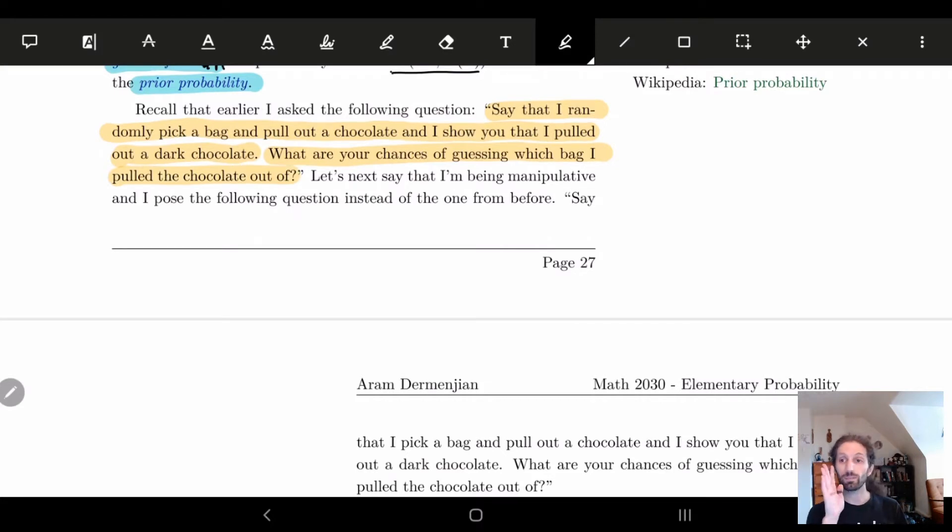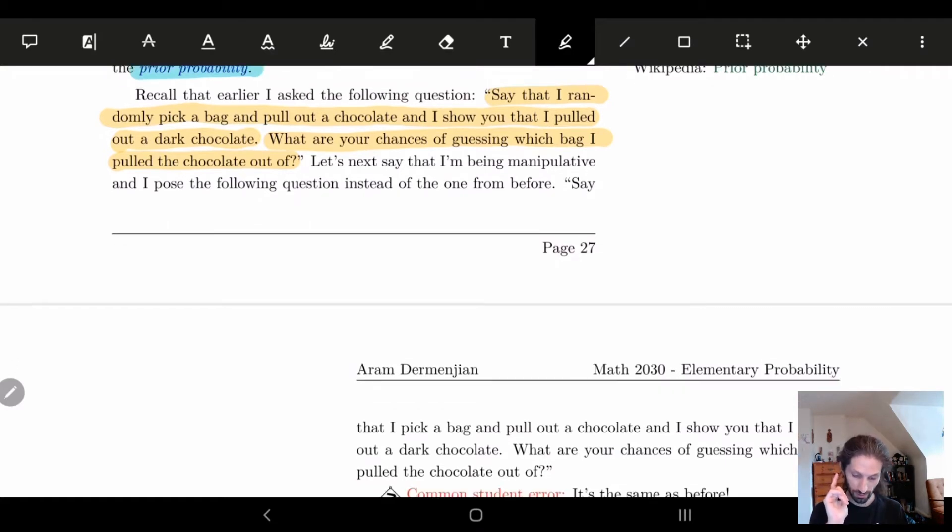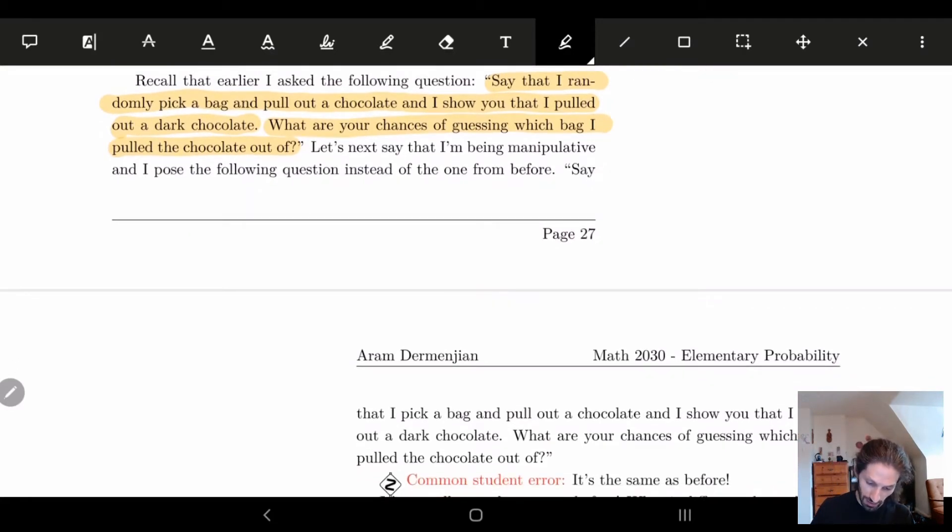So next I'm going to say pretend I'm being manipulative and I'm going to change what I say. What I'm going to now say is: Say that I pick a bag and pull out a chocolate and I show you that I pulled out a dark chocolate. What are the chances of guessing which bag I pulled the chocolate out of?